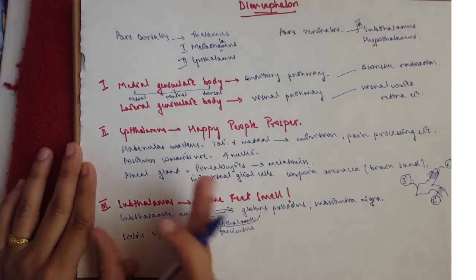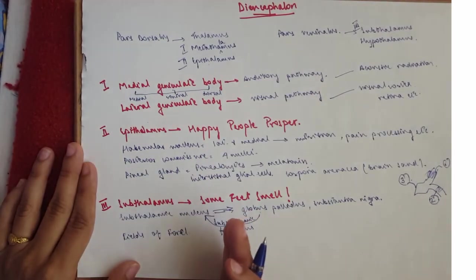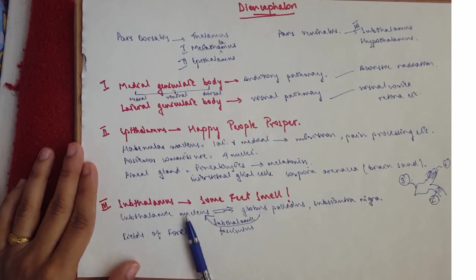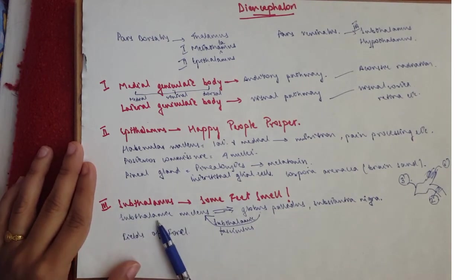So the subthalamic nucleus is on this side, then you have the internal capsule here, and then you have the globus pallidus here. So it crosses the internal capsule through these fibers and reaches the subthalamic nucleus.